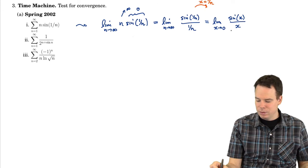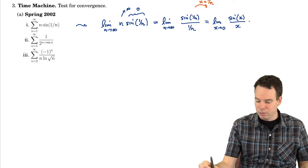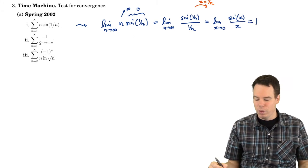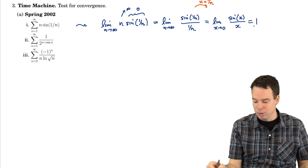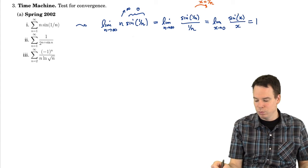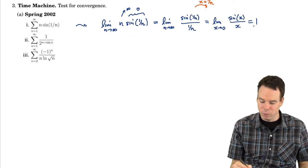And so as n goes to infinity, 1 over n goes to 0, so that means x goes to 0. So what I did from here to here was I just replaced 1 over n with the variable x. What's the limit as x goes to 0 of sine x over x? That's a very familiar limit. That's equal to 1.